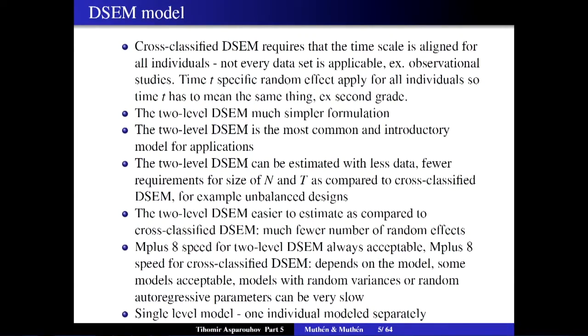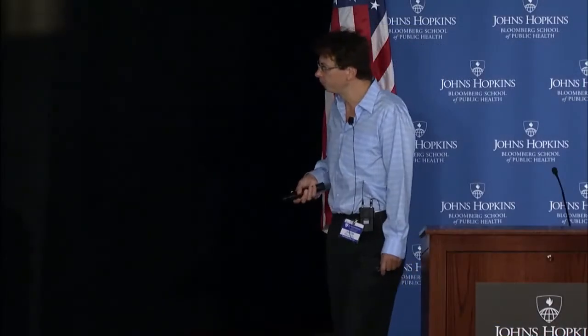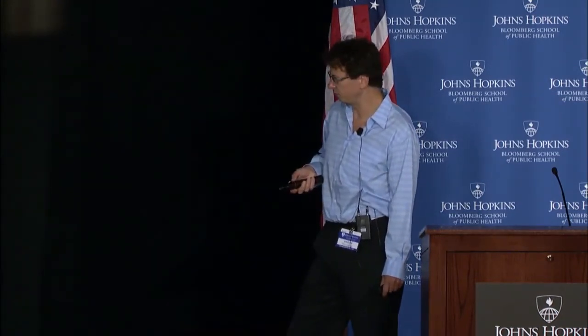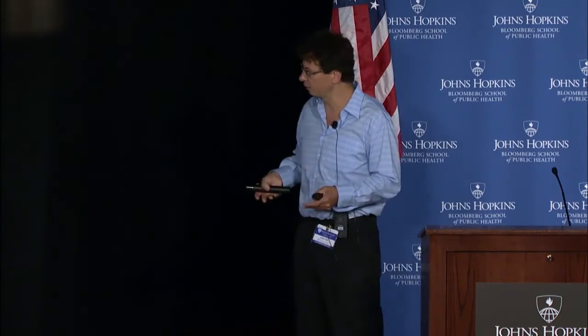The two-level DSEM model is easier to estimate compared to the cross-classified because it has far fewer random effects. The cross-classified model can sometimes be very slow, particularly when you have subject-specific autoregressive coefficients and subject-specific variances. In that case, the structural equation model on the within level becomes so specific to time and individual that for every data point, you must analyze a completely different structural equation model, making it much slower than two-level models.